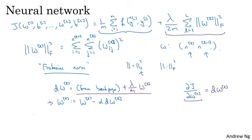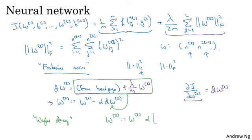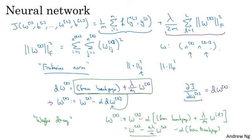It's for this reason that L2 regularization is sometimes also called weight decay. If I take this definition of dWL and just plug it in here, then you see that the update is WL gets updated as WL minus the learning rate alpha times the thing from backprop. This term shows that whatever the matrix WL is, you're taking the matrix WL and subtracting alpha lambda over M times WL, minus alpha times the thing you got from backprop.